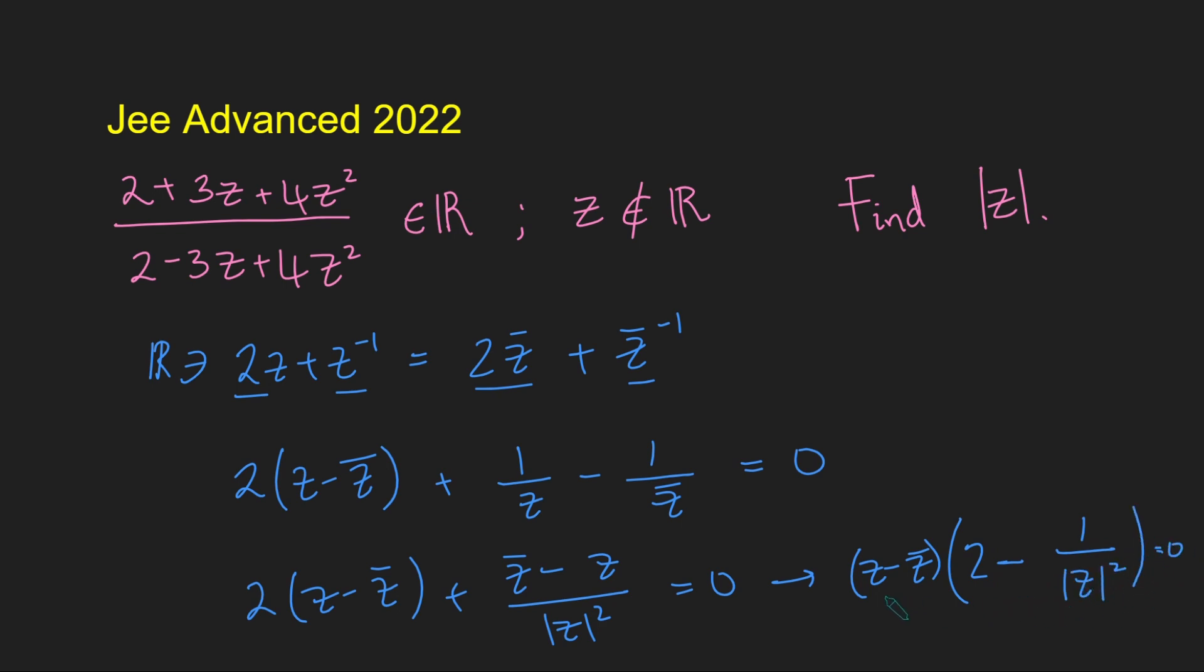And now we're going to use this property here that z is not real. And since z is not real, we know that this guy here is non-zero, so I can cancel that from both sides. And this is very nice because this is just 2 minus 1 over the modulus of z squared equals 0. And so this means that the modulus of z squared is a half, and so therefore the modulus of z is 1 over root 2. And we solve our problem.